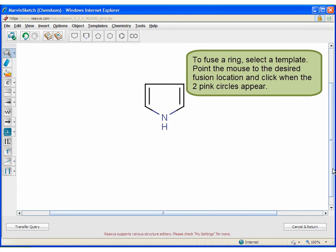To fuse a ring, select a template, point the mouse to the desired location, and click when the pink circles appear.